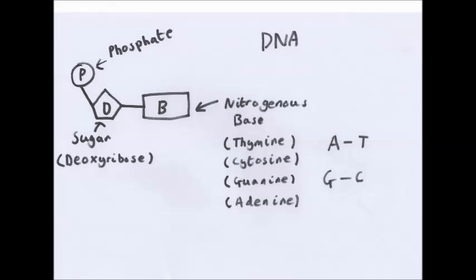In DNA, deoxyribose sugar. And then nitrogenous bases, there are four in DNA: thymine, cytosine, guanine, and adenine. These are complementary with each other. A is complementary to T, G is complementary to C. This is why they bond together. I'll show you how they do that later. But this is basically what a nucleotide is.